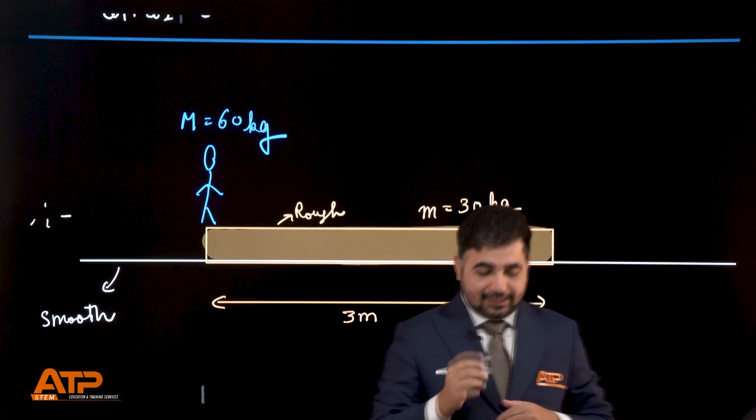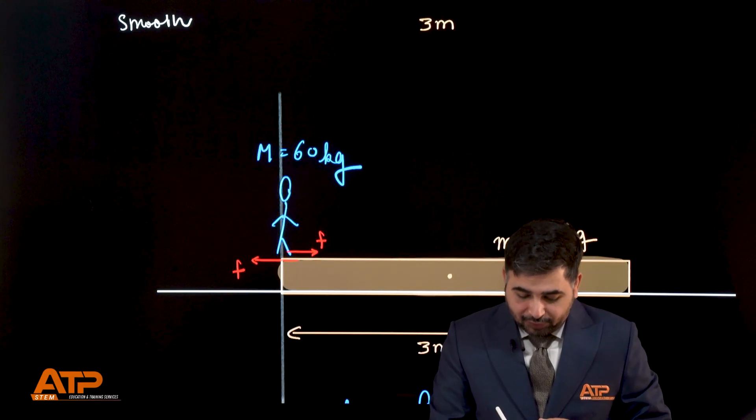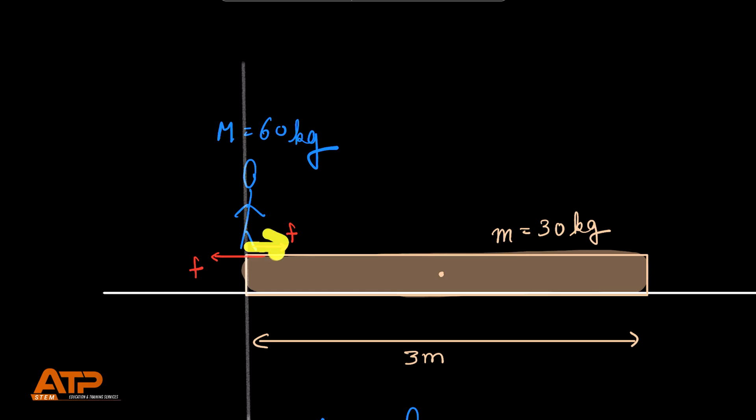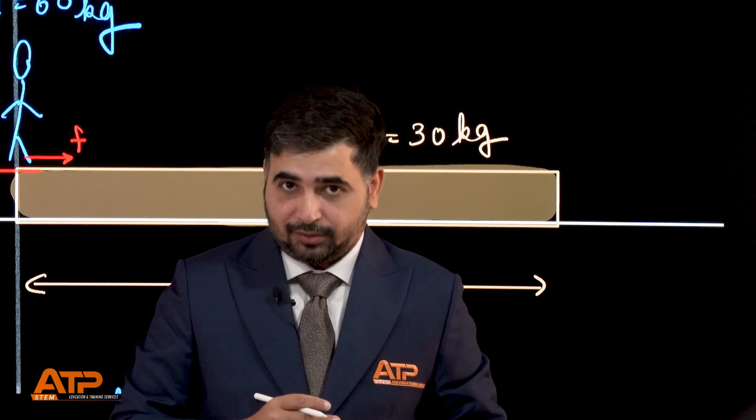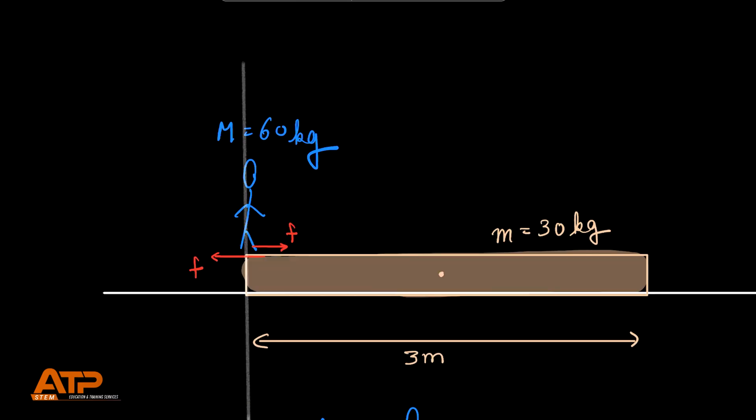No. This is because when the person will try to move, the friction on the person will be forward whereas the same friction will be backward on the plank. This is because of action and reaction. There is no other horizontal force on the system apart from this action-reaction pair.